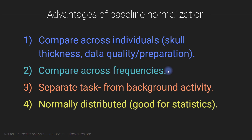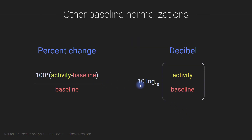Another advantage of baseline normalization is that it allows you to separate task-related aspects of the signal — those elicited by the stimulus — from the ongoing or background brain activity. Finally, when you baseline normalize the data, the resulting power values are normally distributed or approach a normal distribution, and normally distributed data values are good for parametric statistics.